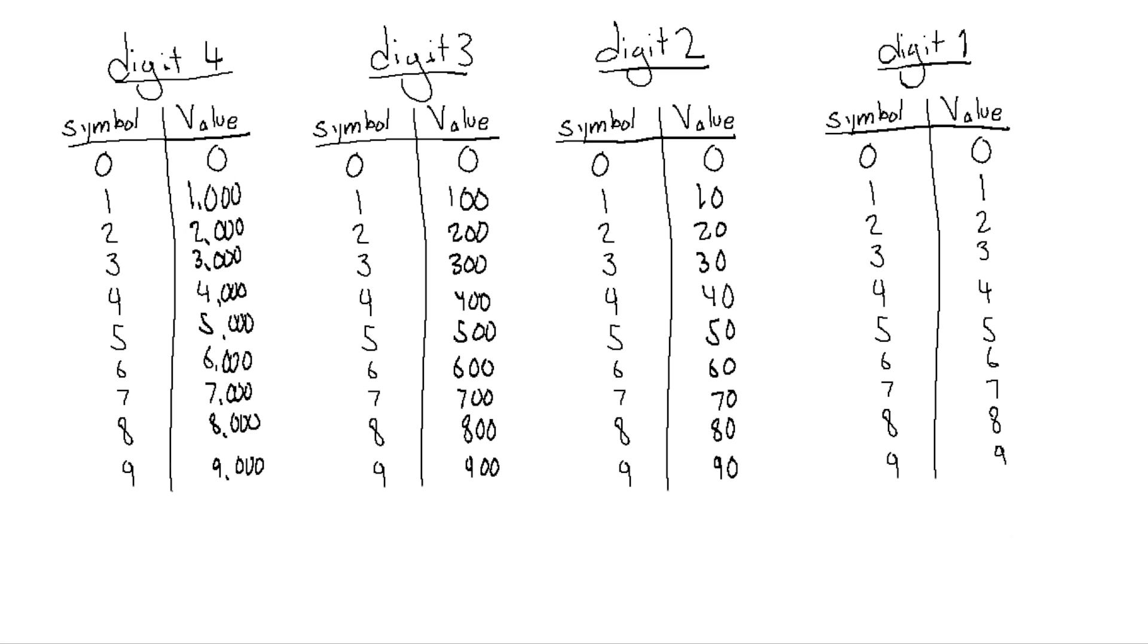If we want to make the number we saw before, we just pick the values we need to add together to get that number, and then write the symbols that represent those values in the right digits. Since we need 3000, we'll use the symbol 3 in the fourth digit. We need the value 100, so we'll take the 1 in the third digit, and of course you see where this is going. We take 9 for the second digit and 1 for the last: 3,191. This is pretty obvious to us because we're so used to this process that we don't even have to think about it.